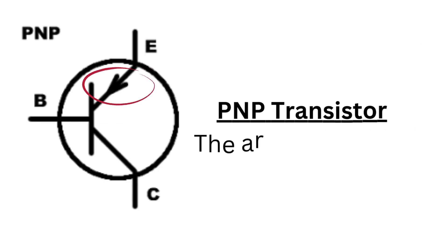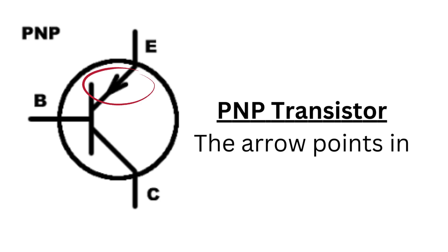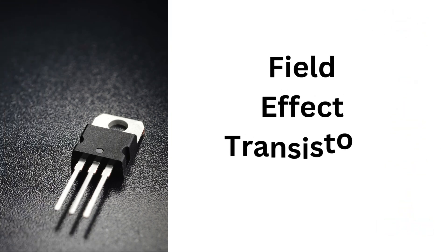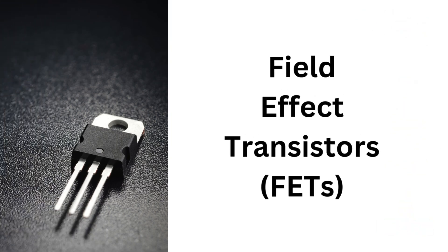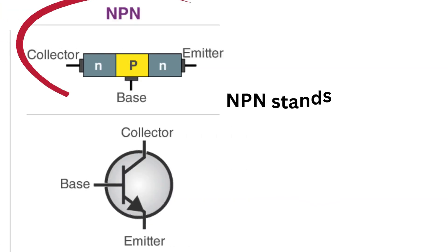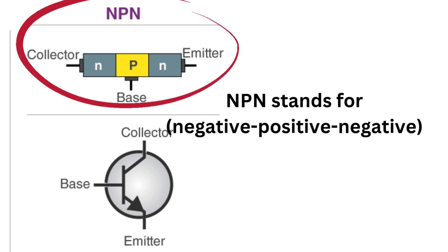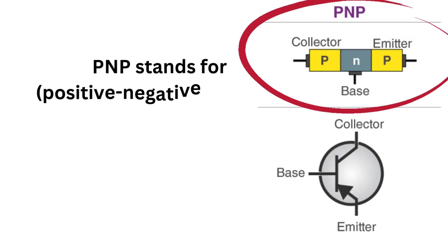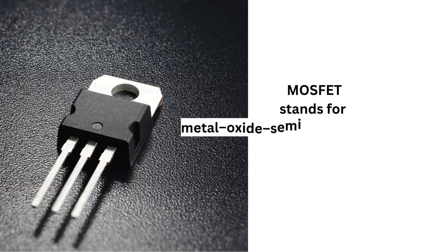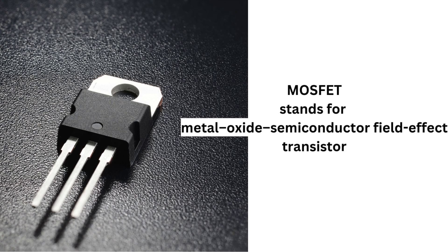For PNP, the arrow points in. There are several types of transistors, but the two main categories are bipolar junction transistors (BJTs) and field effect transistors (FETs). BJTs have three layers of semiconductor material and come in two types: NPN (negative-positive-negative) and PNP (positive-negative-positive). They're commonly used for amplification. FETs control current using an electric field and are more efficient. The most common type is the MOSFET — metal oxide semiconductor field effect transistor — widely used in digital circuits. We will discuss more about MOSFET in a separate video.